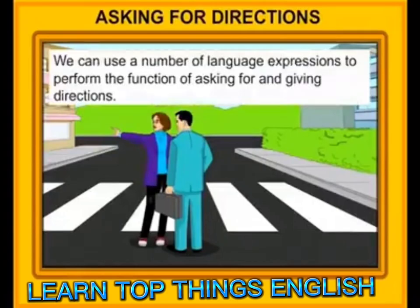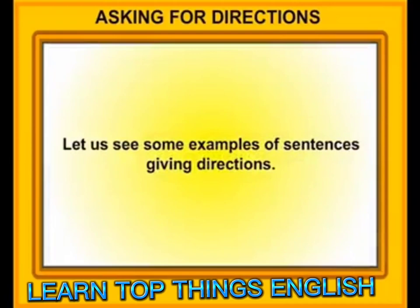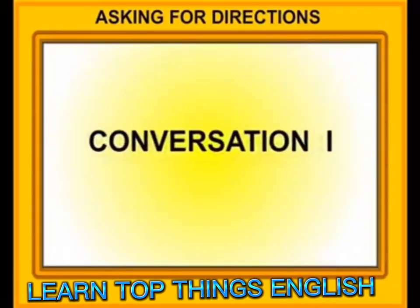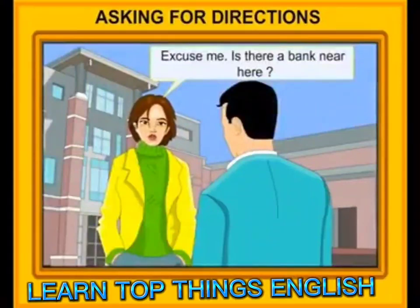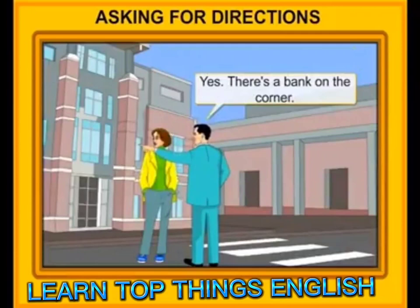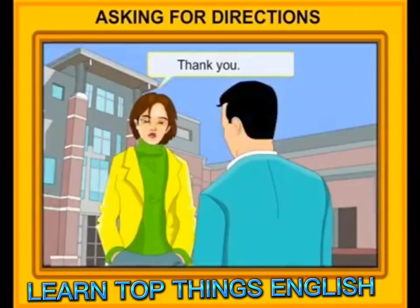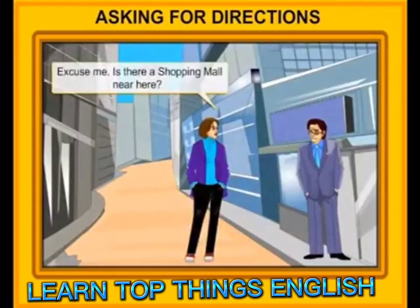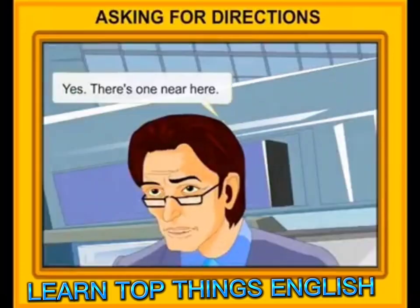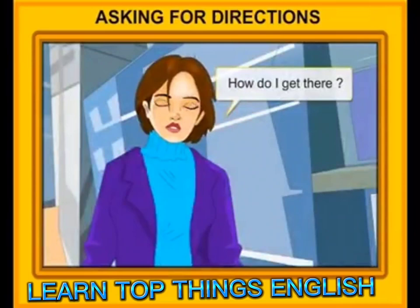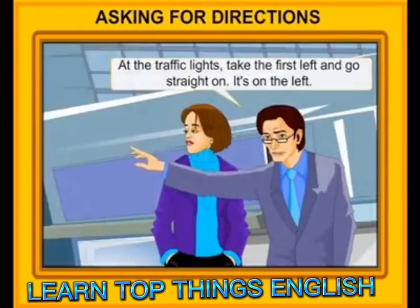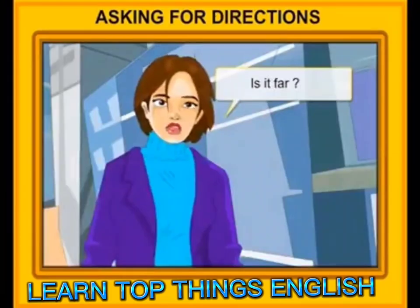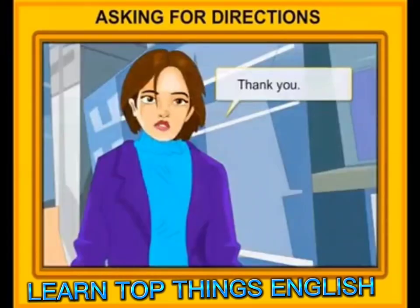Asking for directions. We can use a number of language expressions to ask for and give directions. Conversation 1: Excuse me. Is there a bank near here? Yes, there's a bank on the corner. Thank you. You're welcome. Conversation 2: Excuse me. Is there a shopping mall near here? Yes, there's one near here. How do I get there? At the traffic lights, take the first left and go straight on. It's on the left. Is it far? Not really. Thank you. Don't mention it.